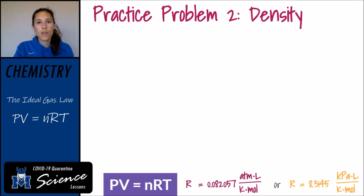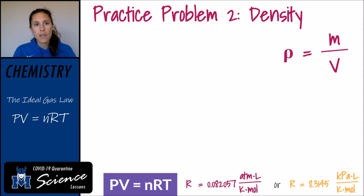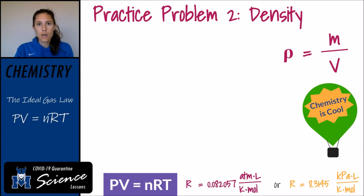In the second practice problem, we're going to look at how we can use the ideal gas law to calculate the density of a gas. Density is mass divided by volume, and rho is the variable we use to symbolize density. A good example of density relating to gases is a hot air balloon — when it's rising, the air within the balloon has less mass per unit volume than the surrounding air, so it gets buoyed up and starts to rise.